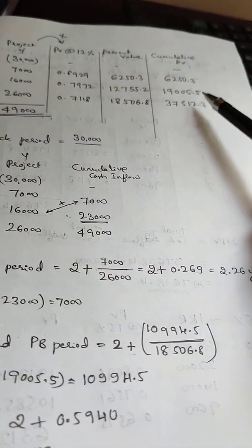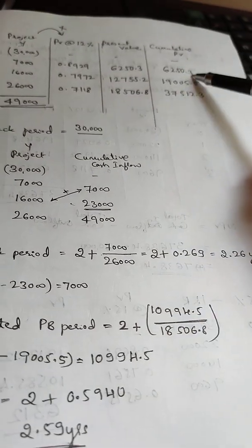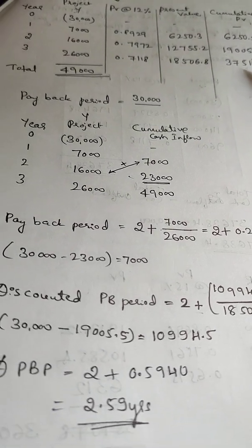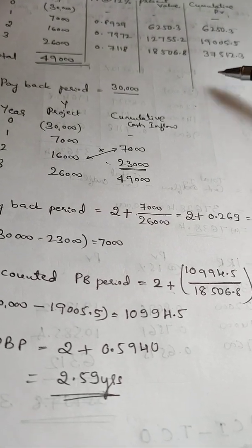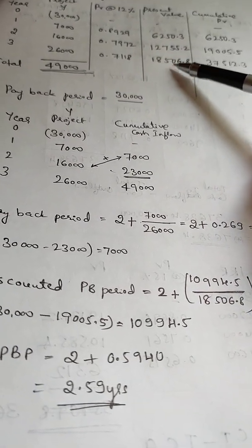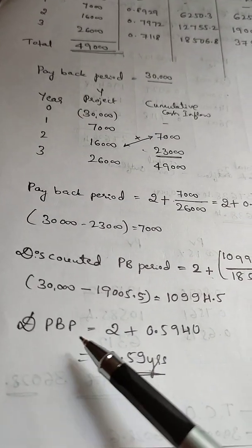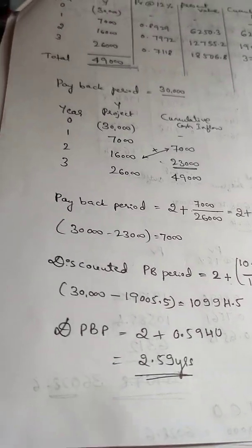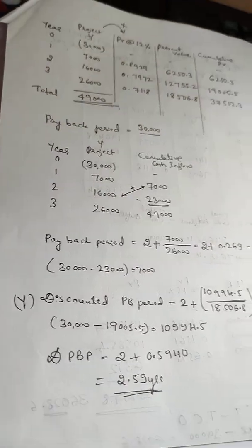For Project Y's discounted payback period, the cumulative PV reaches 30,000 between year 2 (19,005.5) and year 3. The balance after year 2 is 30,000 minus 19,005.5 = 10,994.5. The year 3 discounted cash flow is 18,506.8. So discounted payback period = 2 plus (10,994.5 divided by 18,506.8) = 2.594, that is 2.59 years for Project Y.